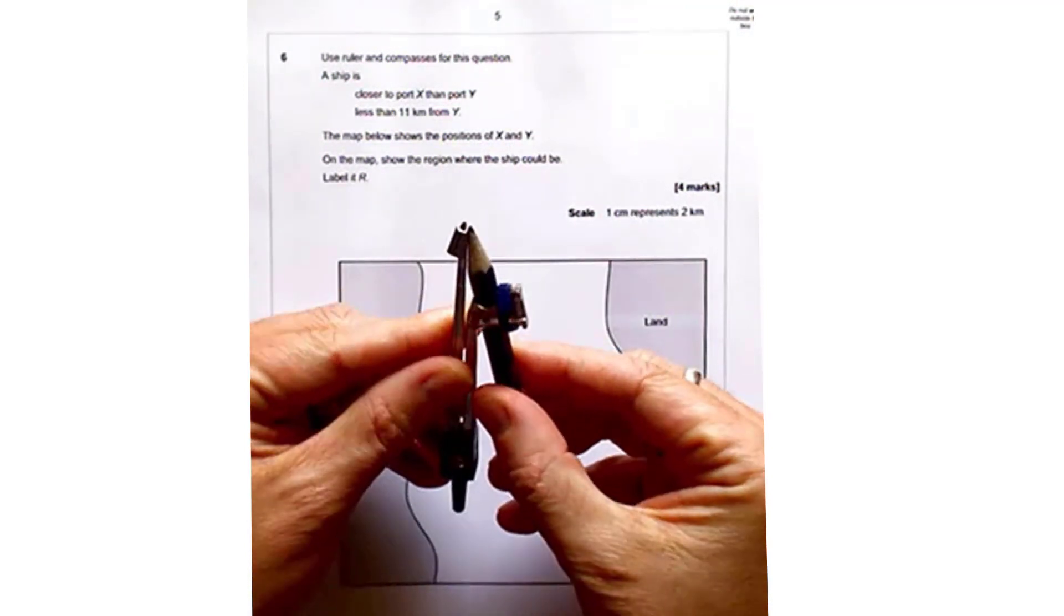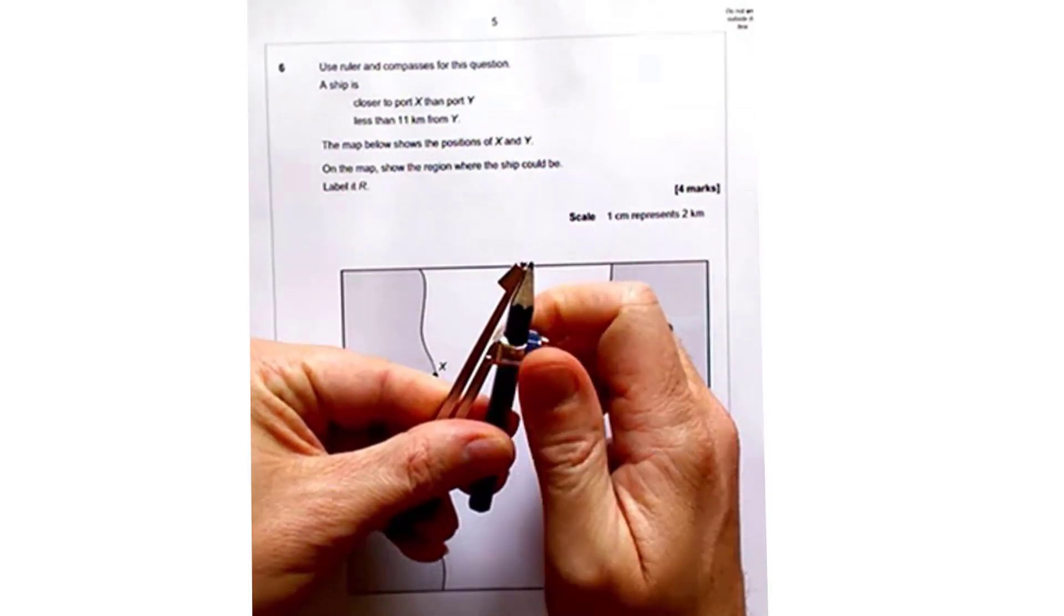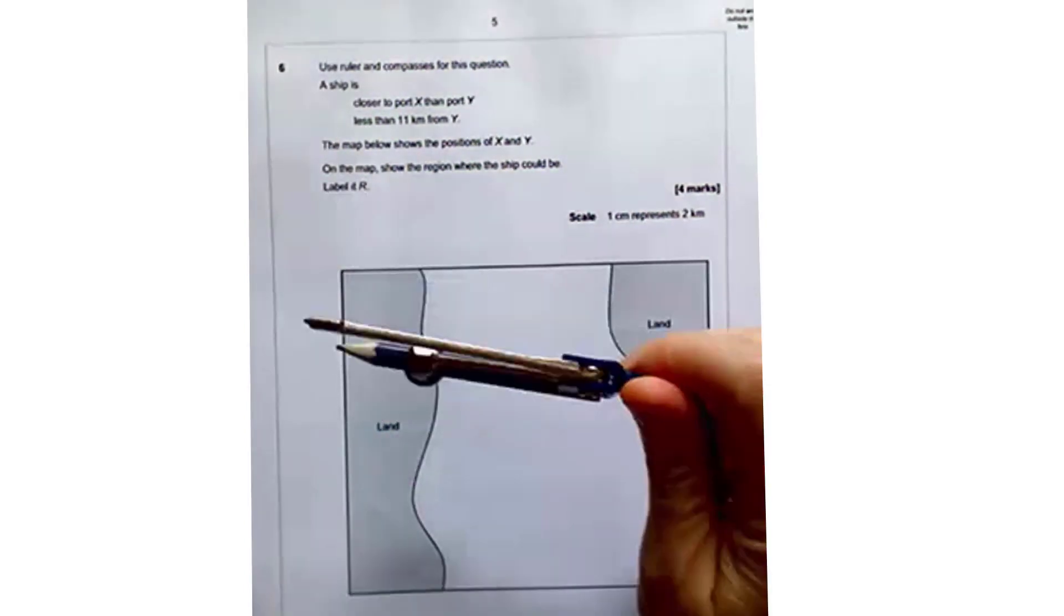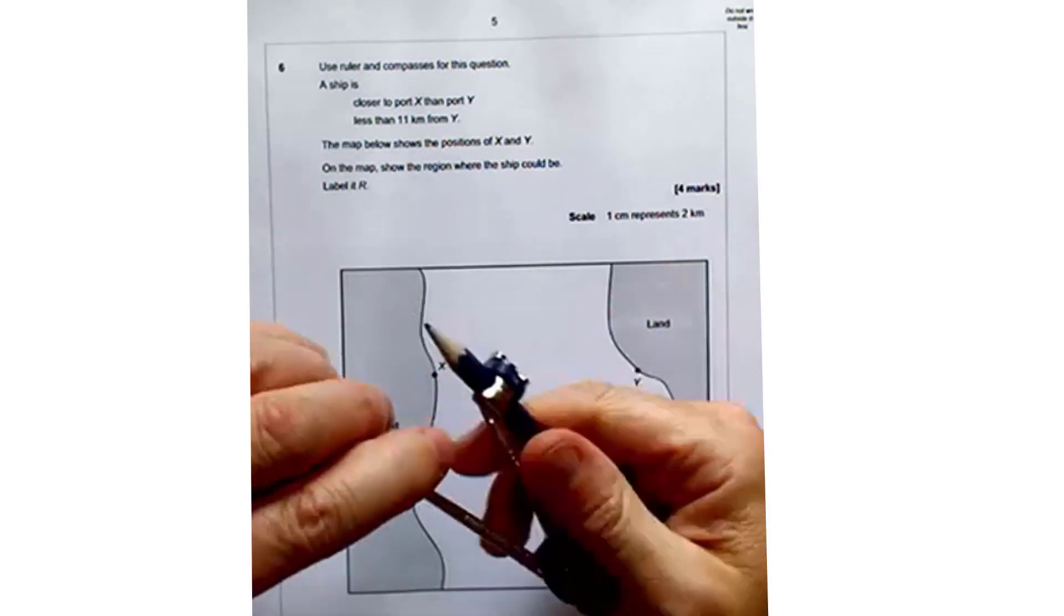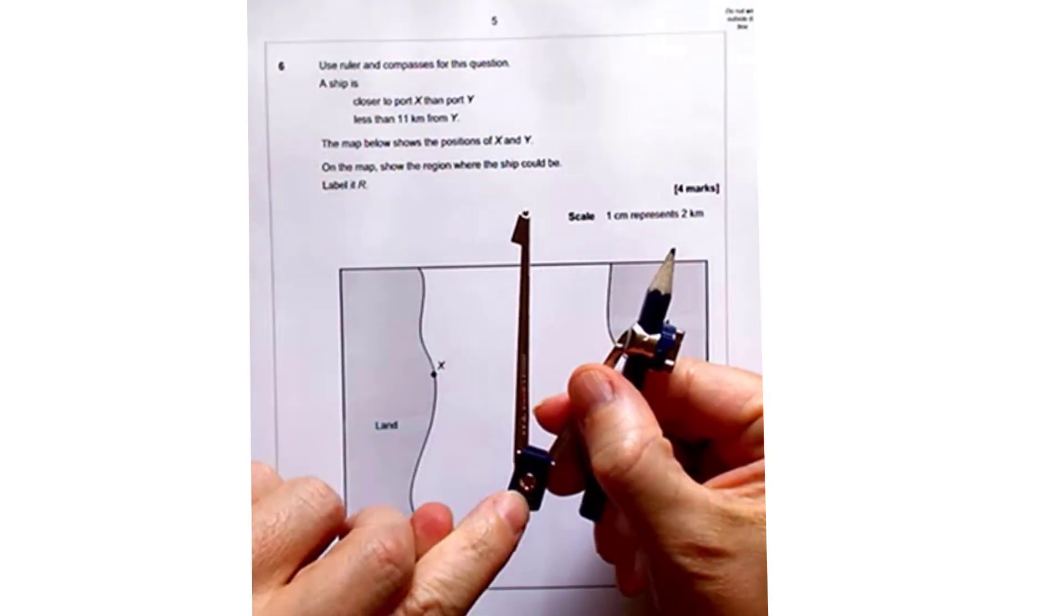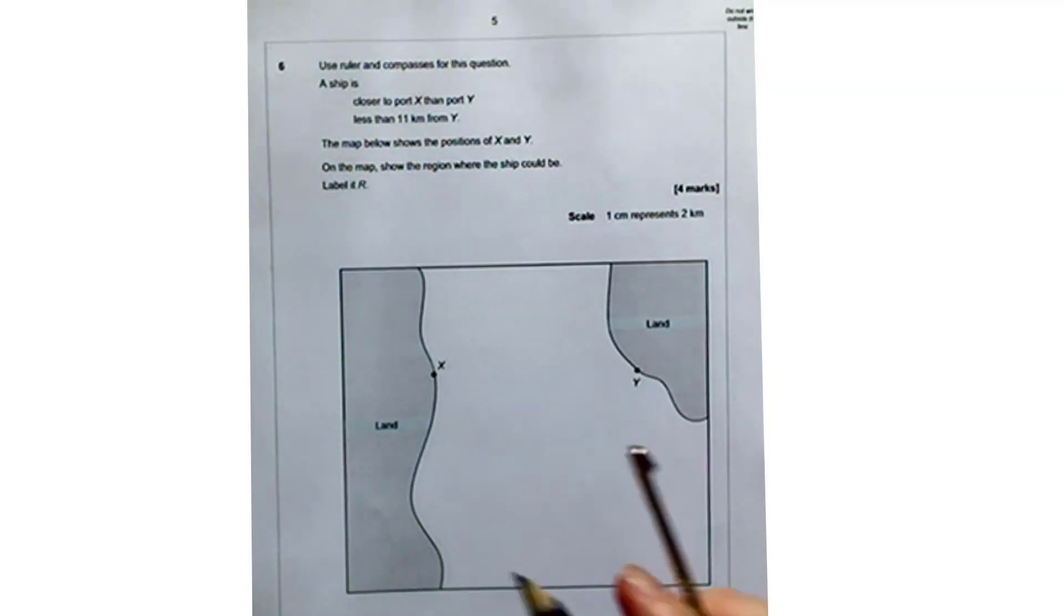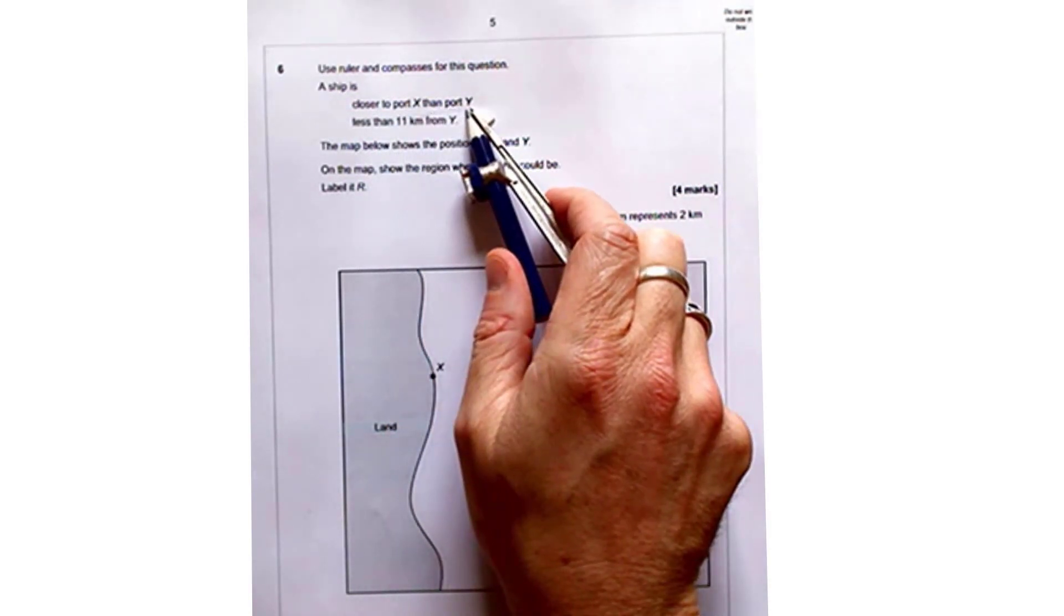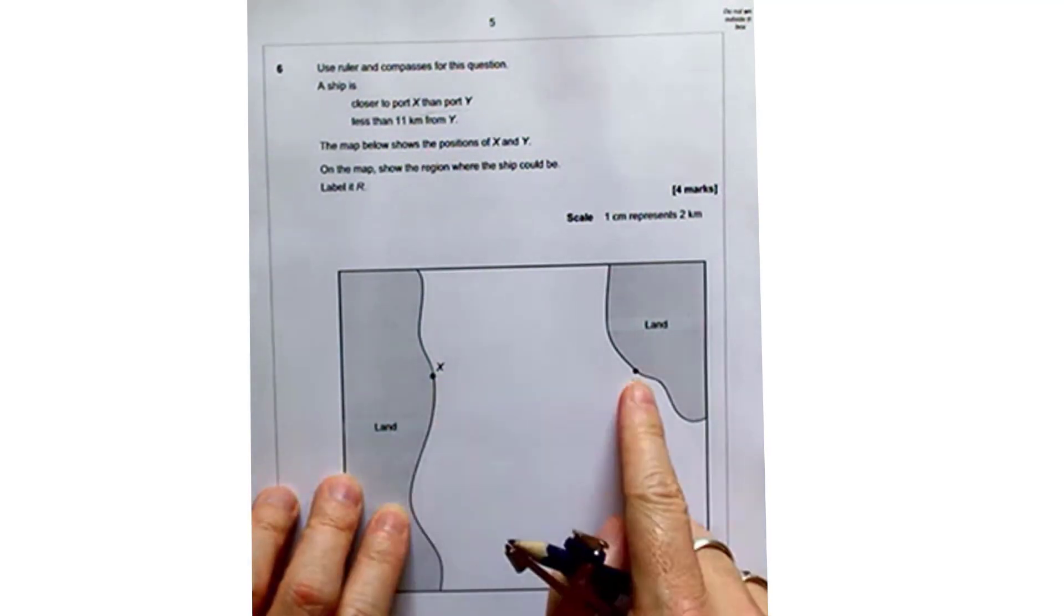Make sure you've got a small sharp pencil. Make sure that the tip of the pencil and the tip of the compass line up. Make sure it's a short pencil so that when you twirl it at the end it doesn't bump into your fingers. And make sure it's not too loose, and if it is, make sure you tighten it up before the exam with a screwdriver. We're going to have to form a loci of points for the closer to port X than port Y. Now, the points that are equidistant are going to be the perpendicular bisector of the line XY.